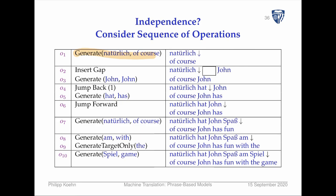We look at the sequence of operations that we do. The operations talked about so far are translation operations — we call them 'generate' here. So 'naturally,' 'of course,' 'John,' 'John has had naturally, of course' — this is a sequence of generated operations. It might also have insertion of words, which is allowed when breaking up phrase pairs into smaller units.